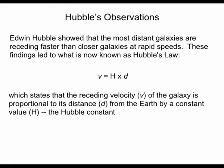Hubble's observation of a red shift in the light coming from galaxies means that the earth and the source of the light — the galaxies — are all moving away from each other. He also observed that the more distant galaxies were receding faster than the ones closer to earth. These findings are captured in a very simple relationship we now call Hubble's law, which states that the receding velocity of the galaxies is proportional to the distance from the earth by a constant value — a value we've named the Hubble constant. If all galaxies are moving away from the earth, that means the universe must be expanding, in agreement with the Big Bang theory.